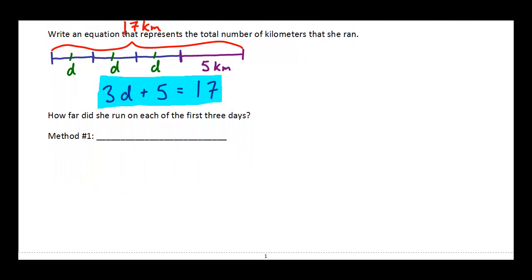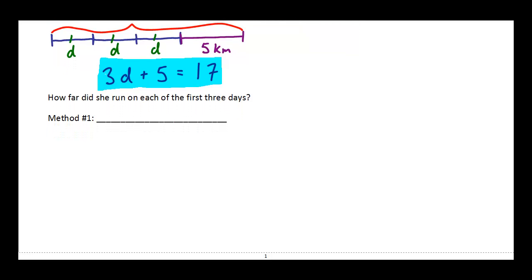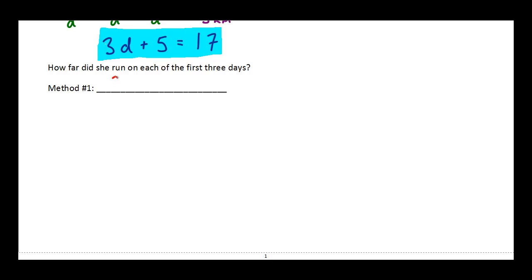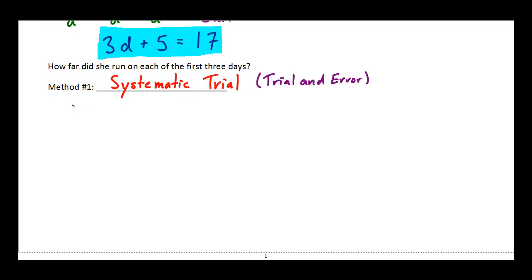So the next question we have here is how far did she run? So I'm not happy just to leave this unknown variable as it is. I want to know how far is that distance, D, that she ran. So there's two different ways that we're going to learn about solving this today. And then we're going to do a second or a third method after this. So method one is something we call systematic trial, which is really just a fancy way of saying trial and error. Basically, we've got our equation, which is 3D plus 5 is equal to 17.